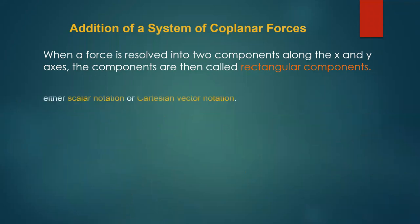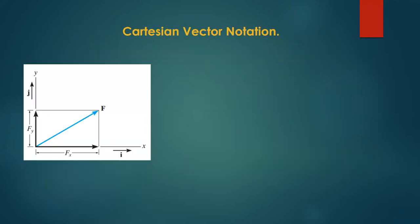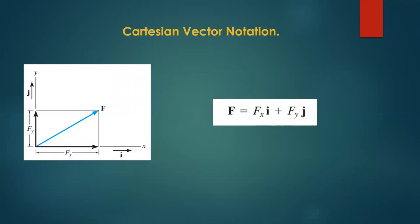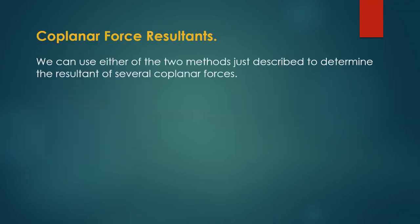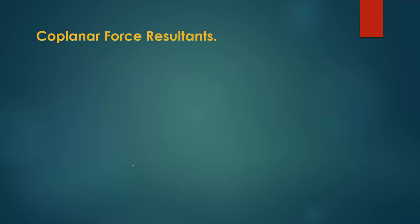I've explained the scalar component and the Cartesian vector notation. Now let's begin to look at some questions. Moving to co-planar force resultants: what I showed before was for one single force. What if you have two or more forces? How do you find the resultant? It's also very simple and straightforward — let's look at this example.